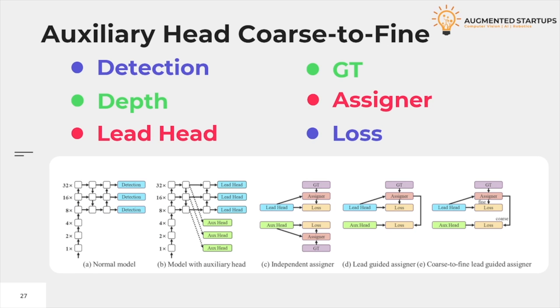The next topic is auxiliary head coarse-to-fine. We call the head responsible for the final output the lead head and the head used to assist in training is called the auxiliary head. We use lead head prediction as guidance to generate coarse-to-fine hierarchy labels.